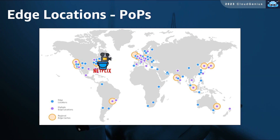Now, the next part of the global infrastructure to stress on is going to be edge locations, or what is also known as POPs — points of presence. We mentioned in the previous video AWS Regions and AZs, which helped a lot in presenting applications to global users located in multiple parts of the world. But AWS does not have a presence in each country and every location all over the world.